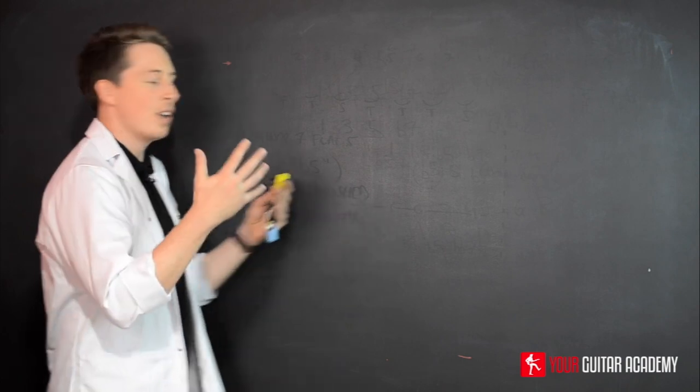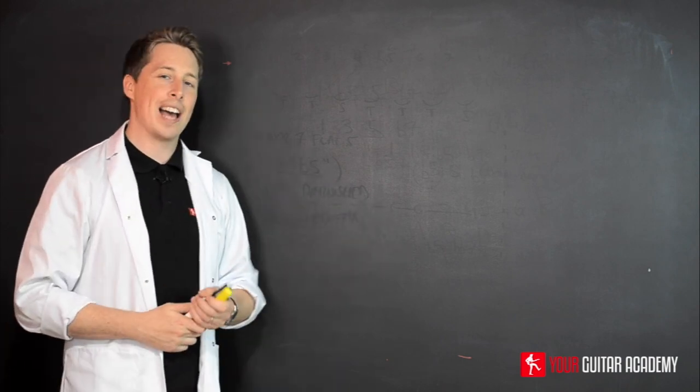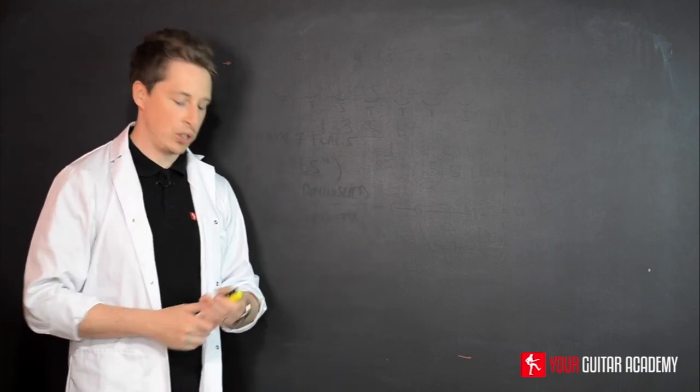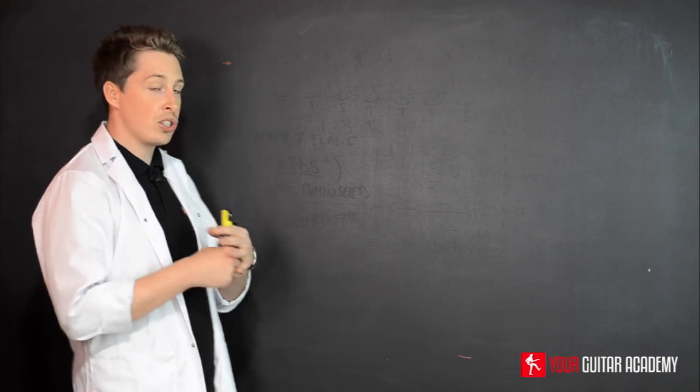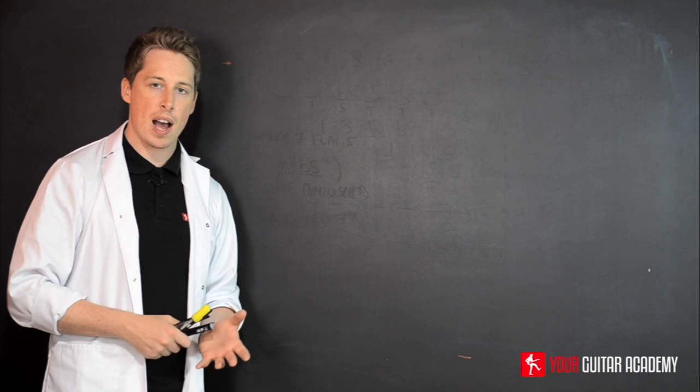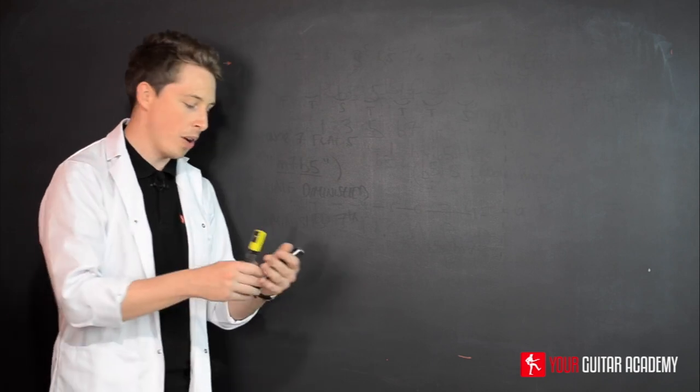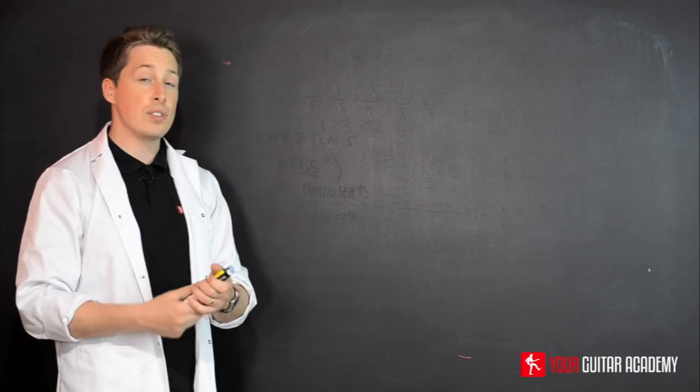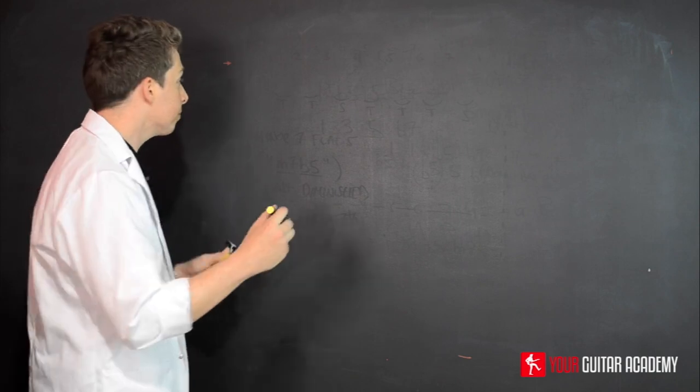Now let's have a look at how to do this with seventh chords. The first thing I'm going to be doing is setting up the basic harmonized scale—the major, the minor, and the diminished. We're going to be using the key of C major at this point.